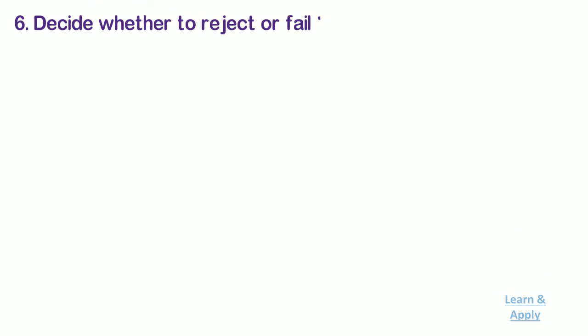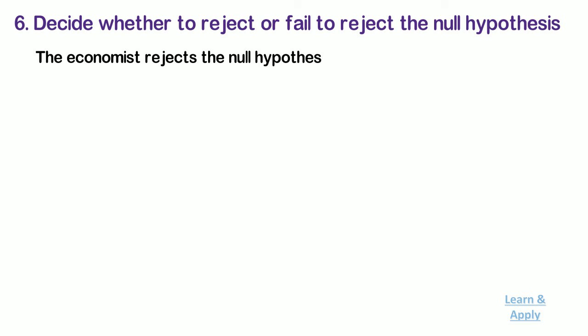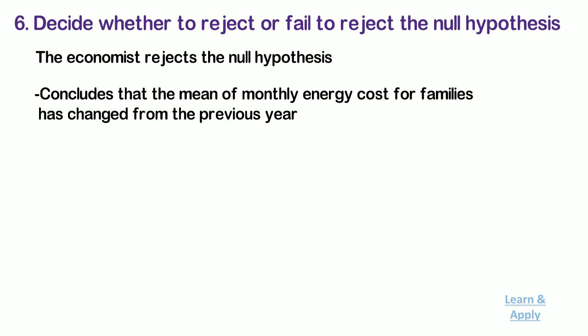Step 6: Decide whether to reject or fail to reject the null hypothesis. The economist rejects the null hypothesis and concludes that the mean of monthly energy cost for families had changed from the previous year.